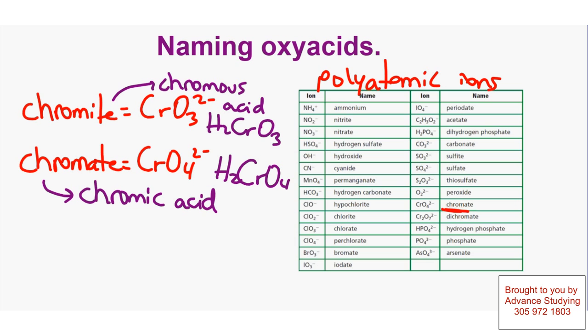What if I had to go lower in the oxygens? That would be H2CrO2, and we would name that hypochromous acid. Let's change color so we could differentiate—hypochromous acid, which of course is H2CrO2.